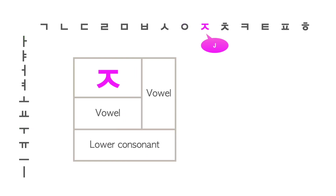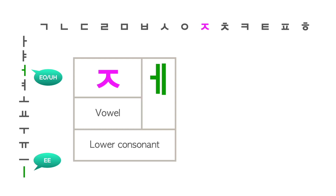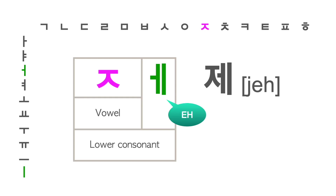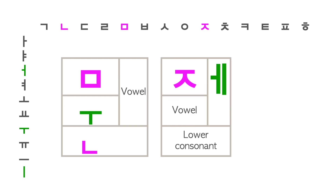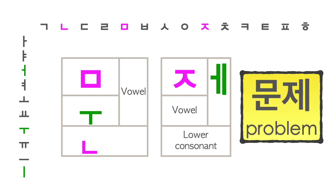This is the consonant 지읒, which makes the J sound. With the vowel 아, this letter sounds 저. Adding a second vowel 이응 makes a complex vowel, and now this letter becomes 제. Adding the first letter from the previous example, 문제 means a problem.